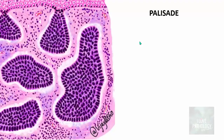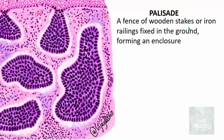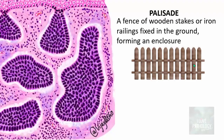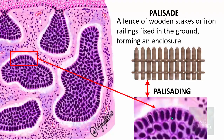At higher magnification, peripheral palisading is the key feature. A palisade is essentially a fence of wooden stakes or iron railings fixed in the ground forming an enclosure — similarly, tumor cells at the periphery form a sort of enclosure. They are arranged parallel to one another, enclosing the tumoral islands. This characteristic peripheral palisading of basaloid cells is the hallmark of basal cell carcinoma.